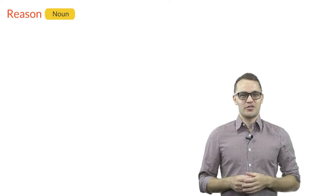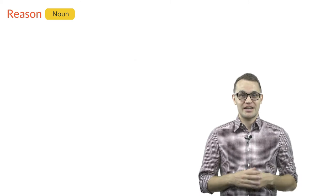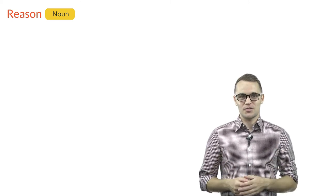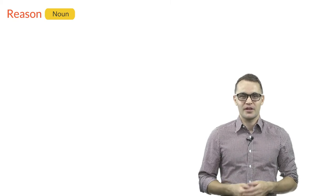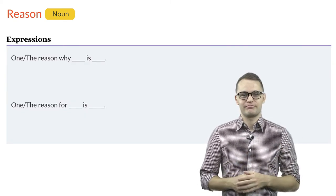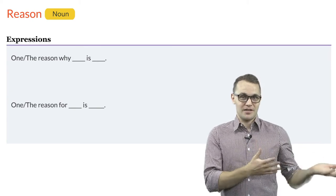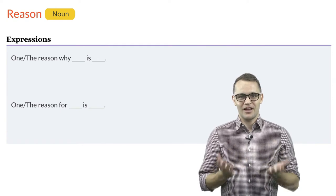So, what are the alternatives we can use to talk about cause? The first word we are looking at is reason. The following patterns and expressions are commonly used with the noun reason. The reason why something is happening is. Or one reason for something is. Let's look at the following examples.